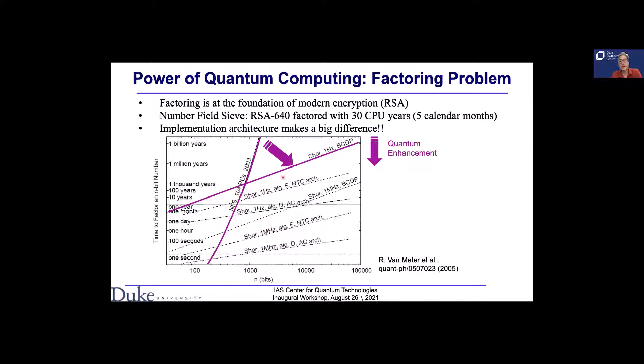Even with the quantum algorithm, factoring a 1024-bit number still takes thousands of years at one hertz. And when the problem size is small, quantum computers don't give you any advantage — classical computers still work better. What Rod and others pointed out is that these three red lines show the same algorithm running at the same clock speed, but on a more advanced computer architecture.